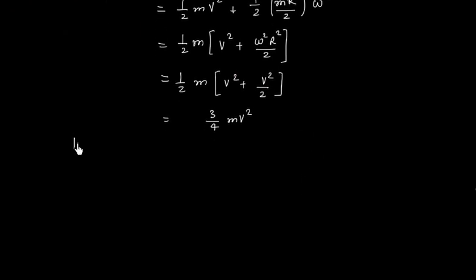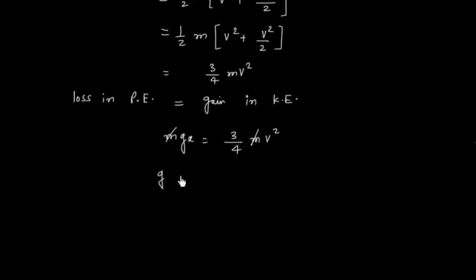So we can say loss in potential energy equals gain in kinetic energy. Potential energy loss is Mgx and kinetic energy gain is 3 by 4 Mv squared. Now let us differentiate this equation on both sides with respect to time. So this will be 3 by 4 times 2V times dV by dT.